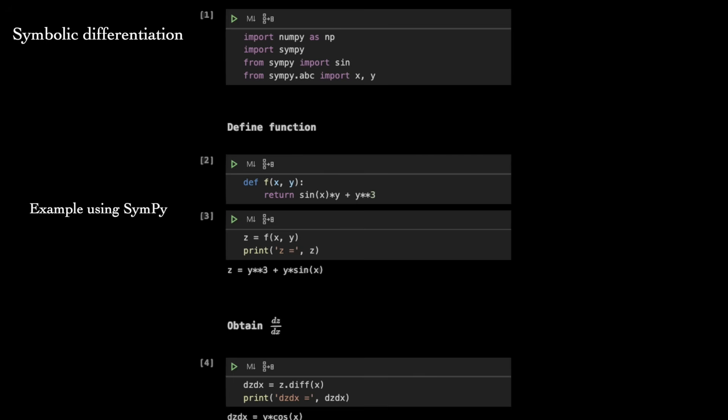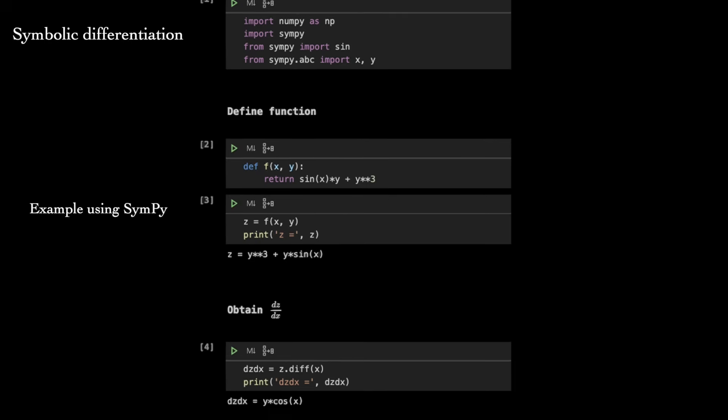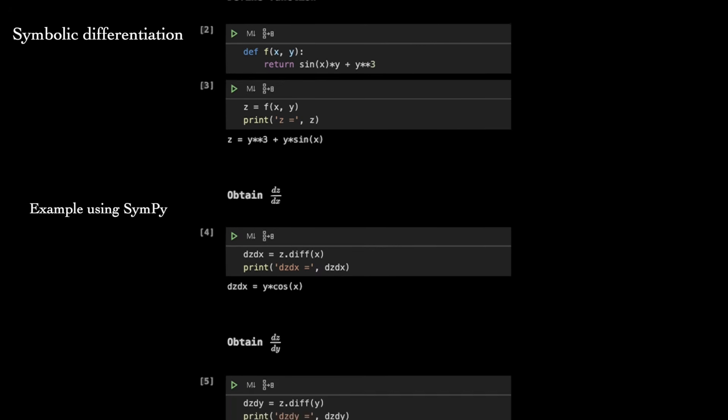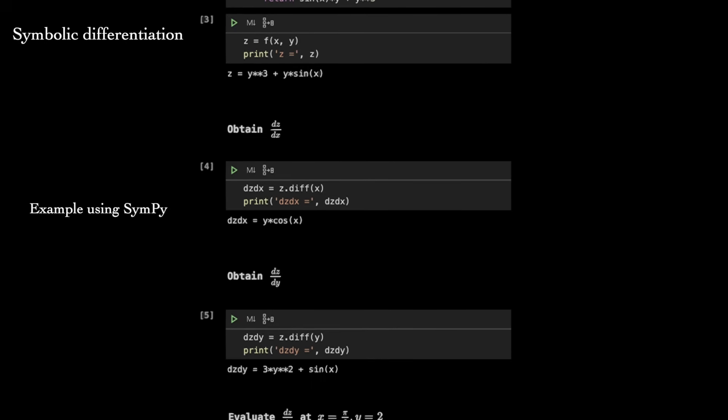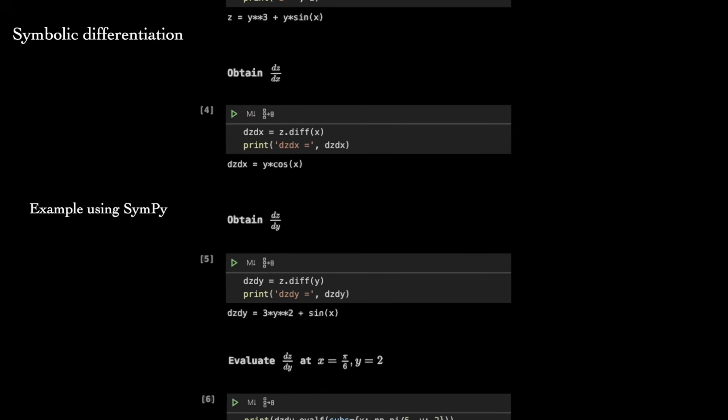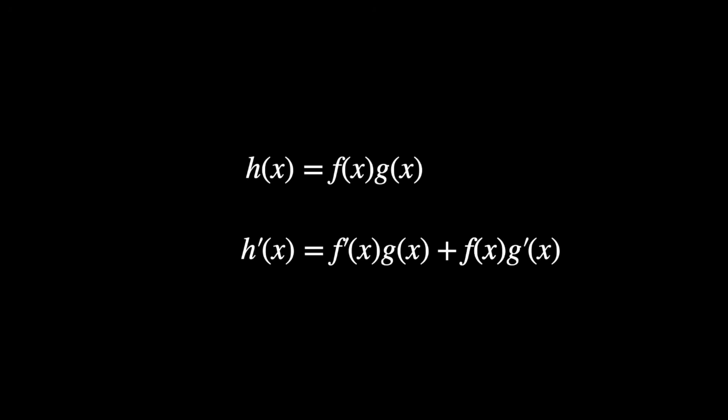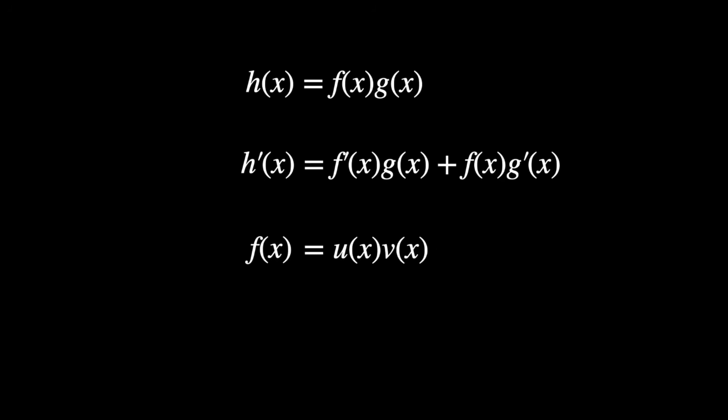Another approach is symbolic differentiation, which is essentially an automated version of the manual differentiation we looked at before. We hand a closed-form version of our function to a symbolic differentiation program that applies the standard derivative rules, transforming the original expression into the derivative of interest. This bypasses the sources of error we saw in numerical differentiation, allowing exact computation of derivatives up to numerical precision. But it comes with its own difficulties. One problem is known as expression swell, where derivative expressions may be exponentially longer than the original function. Why does this happen? Well, some derivative rules, like the product rule, naturally lead to duplicated computation. Any computation shared between f and f' here will be executed twice. If f itself involved a product of functions, this would be further exacerbated.